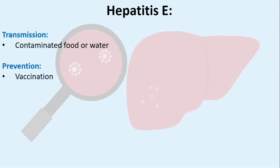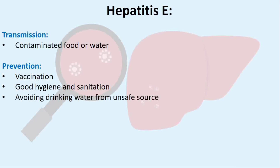Prevention: Currently there is a vaccine to prevent hepatitis E, but it is not widely available. You can reduce the risk of exposure by practicing good hygiene and sanitation, and avoiding drinking water that has come from a potentially unsafe source.